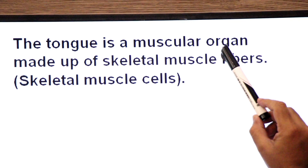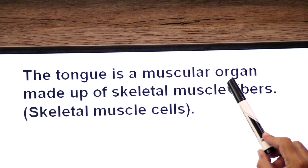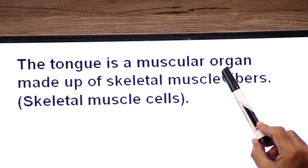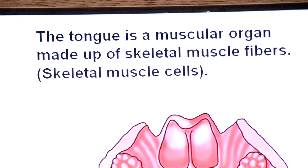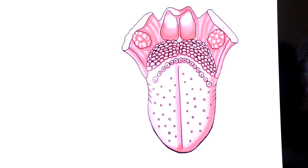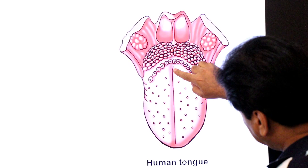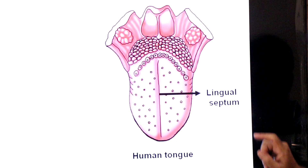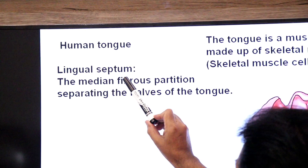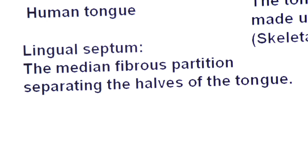Now we will look at the structure of the tongue in brief. The tongue is a muscular organ made up of skeletal muscle fibers. Here you can see the structure of the human tongue. In the center there is a fibrous septum that separates the two halves of the tongue. This septum is called the lingual septum — the median fibrous partition separating the halves of the tongue.